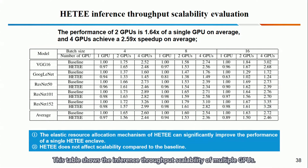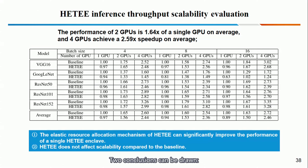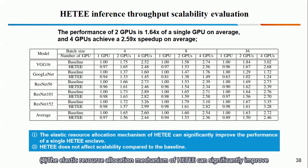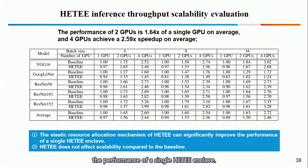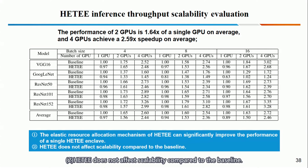This table shows the inference throughput scalability across multiple GPUs. Two conclusions can be drawn. First, the elastic resource allocation mechanism of HDT can significantly improve the performance of a single HDT enclave. Second, HDT does not affect scalability compared to the baseline.